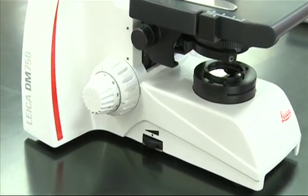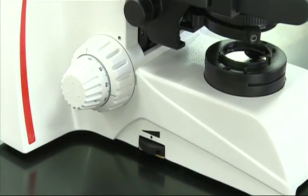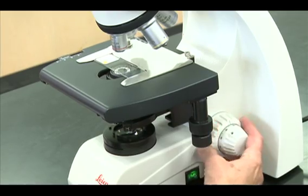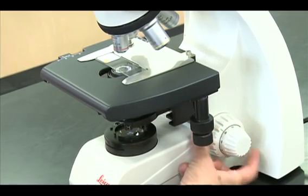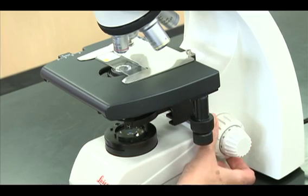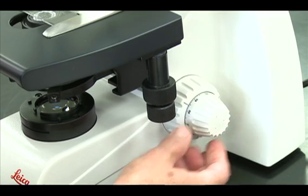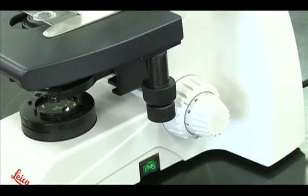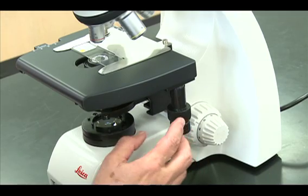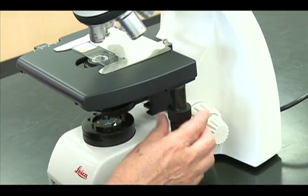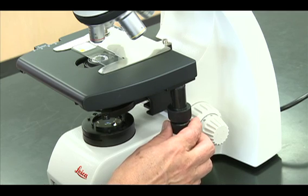Use the rheostat to increase the light to a comfortable viewing level. Use the course adjustment knob to raise the stage all the way up. Use the fine adjustment knob to lower the stage until the slide is in focus. Use the mechanical stage controls to scan your slide.